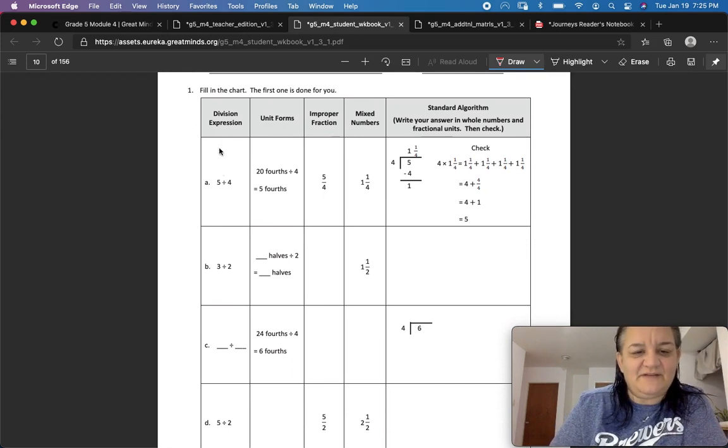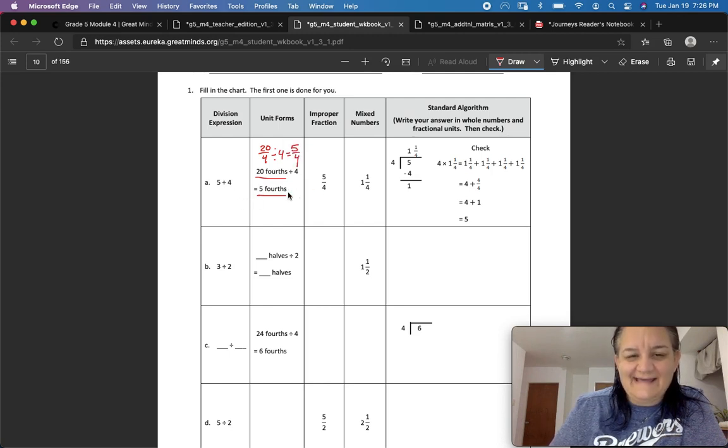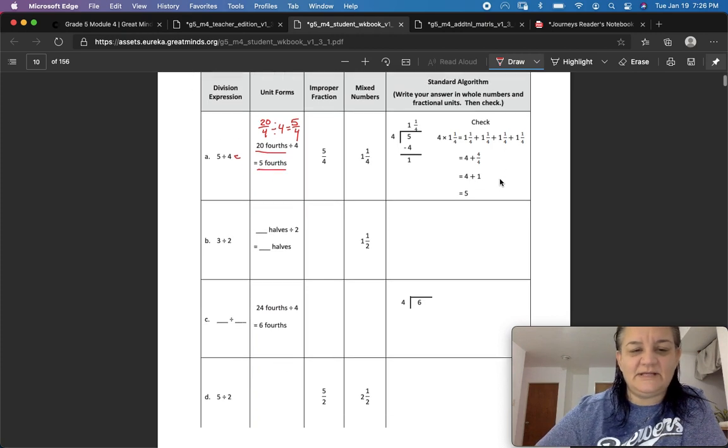The first one is done for you. Fill in the chart. We have our division expression, five divided by four. So we're going to think about that as twenty-fourths divided by four, which equals five-fourths. So twenty-fourths divided by four equals five-fourths. And how do we write that as a mixed number? Five over four as a mixed number, one and one-fourth. And then we're going to practice by actually doing the division and seeing what our remainder is in fractions, and then we're going to check it. Let's do the next one.